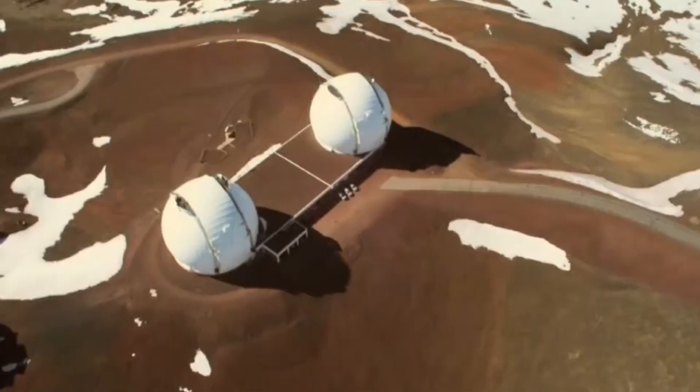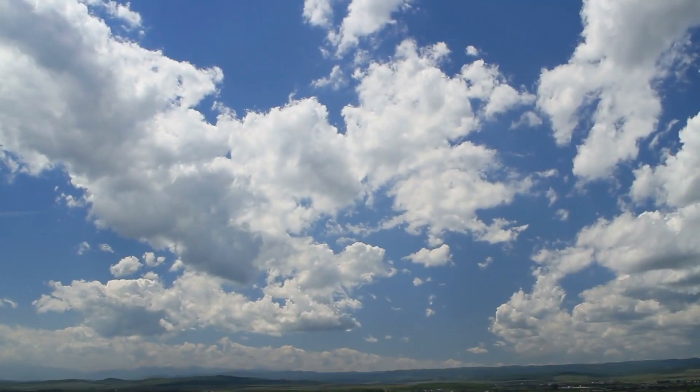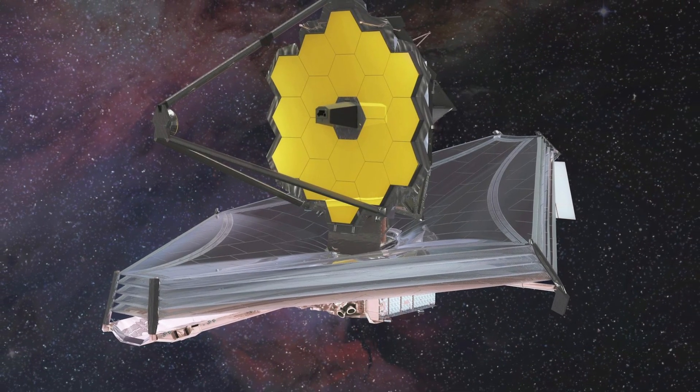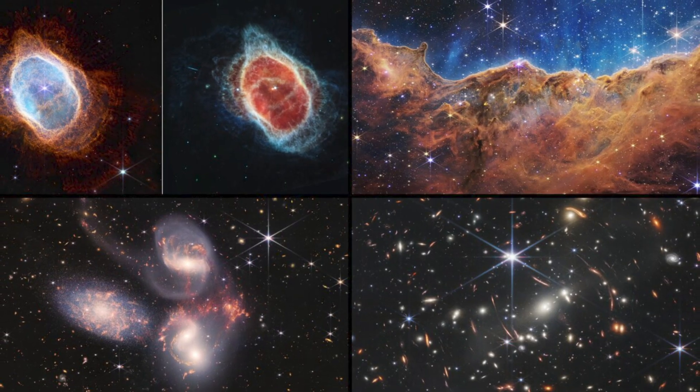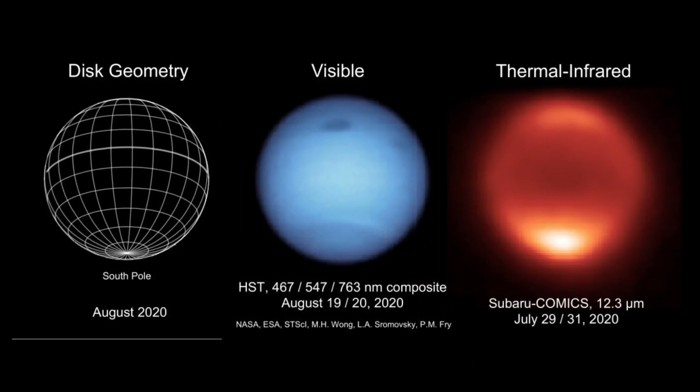Images from observatories such as the W.M. Keck Observatory and the Hubble Space Telescope have documented these rapidly changing cloud patterns over the past years. The James Webb image also reveals a continuous band of high-latitude clouds encircling a previously observed vortex at Neptune's southern pole.